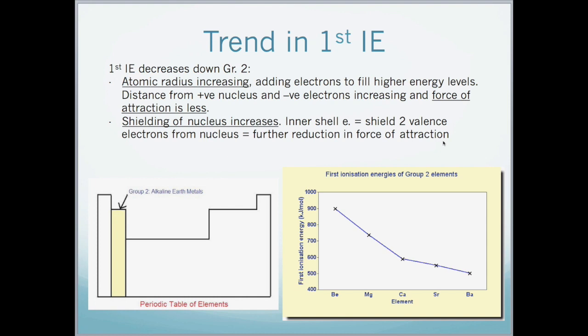On the right here, we can see the trend. As we go from beryllium, which is at the top, down to barium, there is a decrease in the first ionization energy.